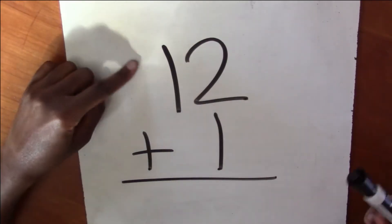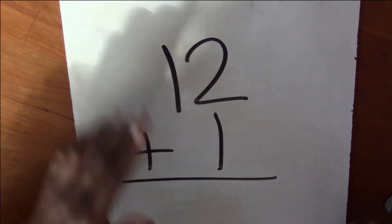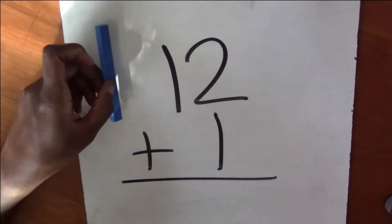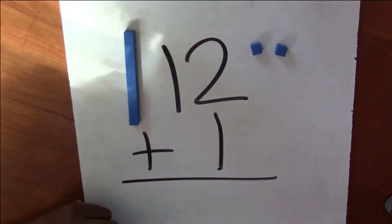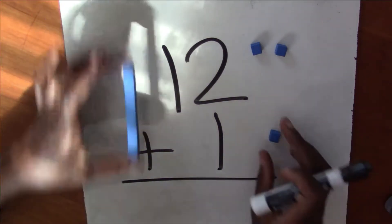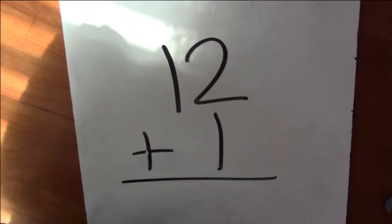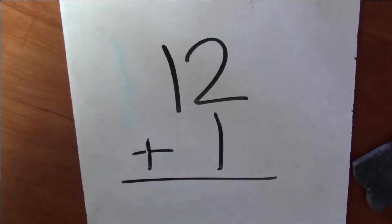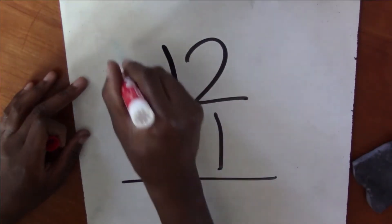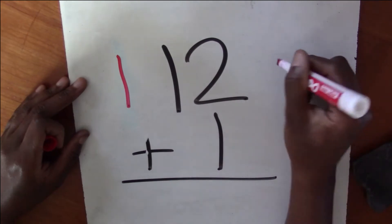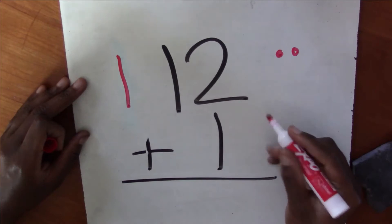All right, our first problem for today is 12 plus one equals. So remember, we can use our 10 sticks like that and then count them all up or we can draw our 10 sticks and that's what I'm going to do today. So I have one group of 10 and I have two ones. One, two. I'm adding on one.